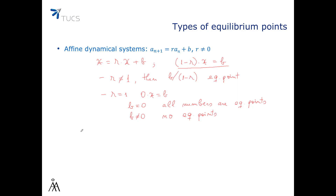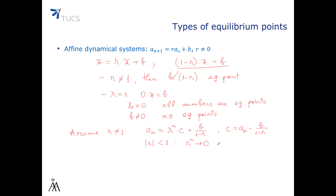Assume that r is different than 1. We will look into what kind of equilibrium point is b over (1 minus r). Recall from the previous video that the analytic form of this linear dynamical system is An equals r to the power n times a constant c, plus b over (1 minus r), where the constant c was A0 minus b over (1 minus r). Now, it's easy to see that if the absolute value of r is smaller than 1, then r to the power n converges towards 0, and so b over (1 minus r) is asymptotically stable.